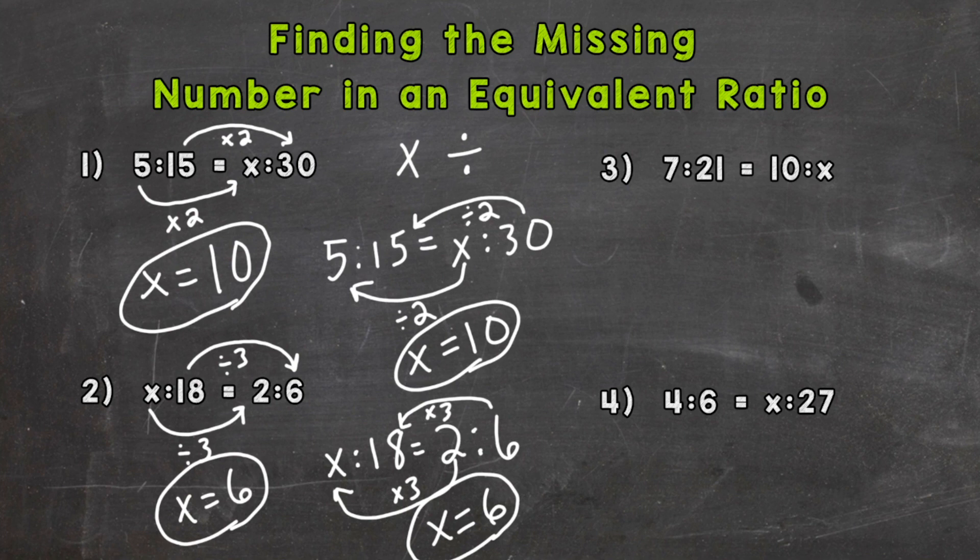Now numbers 3 and 4 are a little different. They take an extra step and you'll see why. Number 3: 7 to 21 equals 10 to x. Let's take a look at what we're given. How do we make 7 equal 10 using multiplication or division? Well, we can't, so these are still going to be equivalent, we just don't have a whole number that we can multiply or divide 7 by to equal 10.